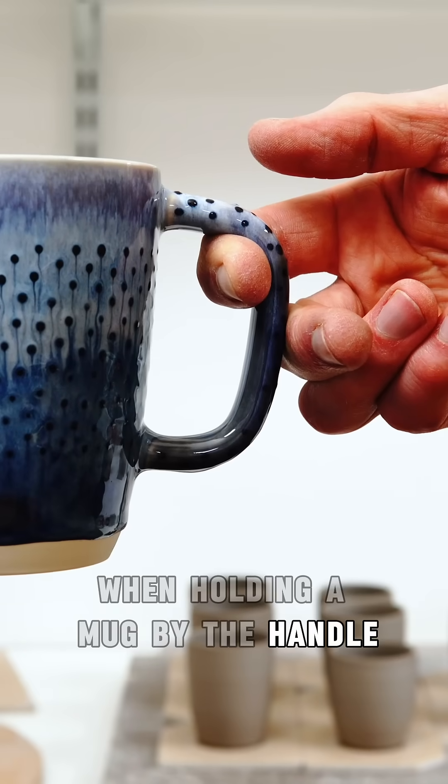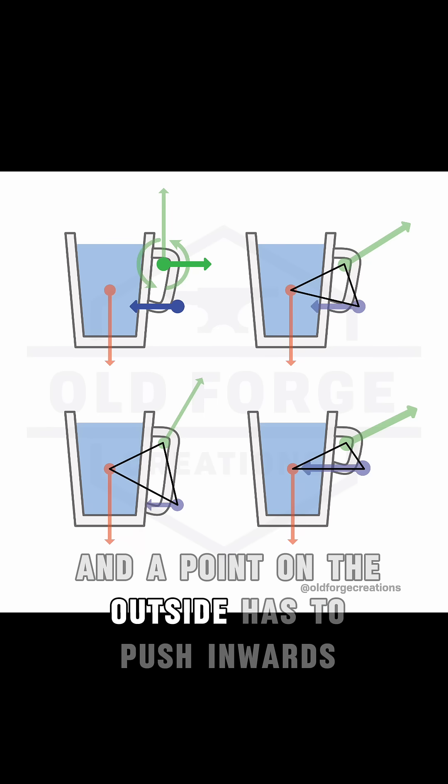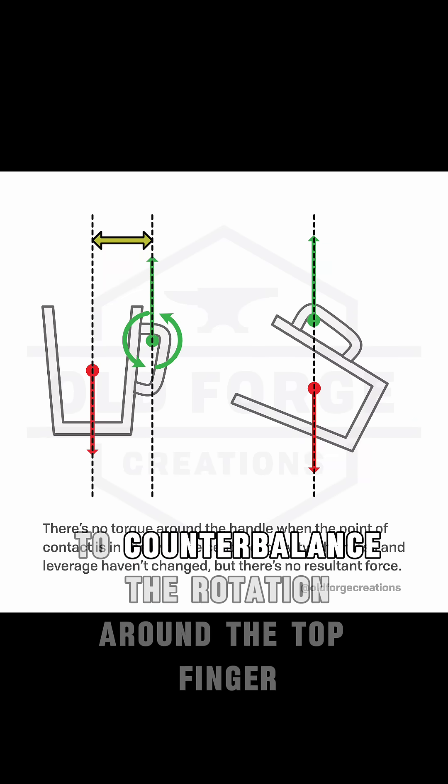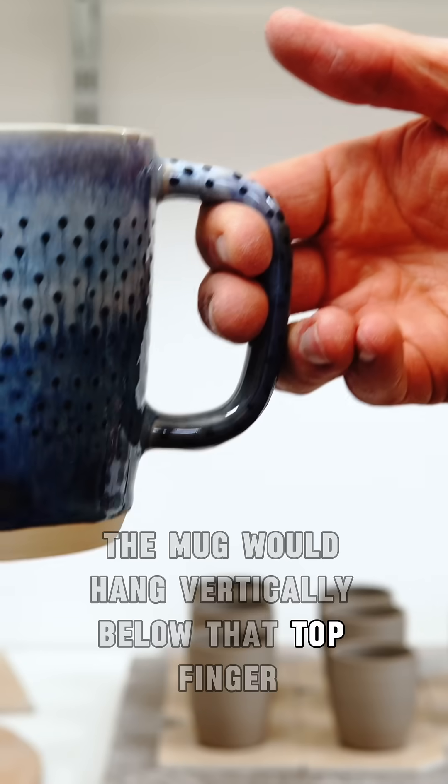When holding a mug by the handle the top finger inside the handle pulls up and outwards and a point on the outside has to push inwards to counterbalance the rotation around the top finger, otherwise the mug would hang vertically below that top finger.